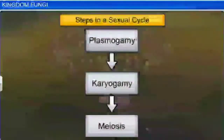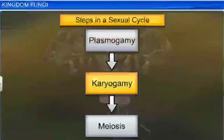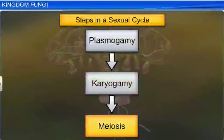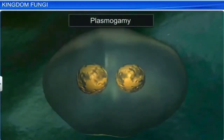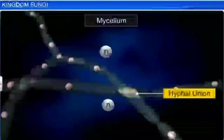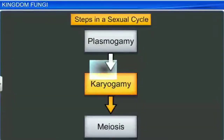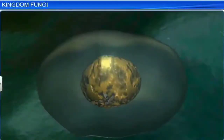There are three steps in the sexual cycle: Plasmogamy, Karyogamy, and Meiosis. The first stage involves the fusion of protoplasms between two motile or non-motile gametes. This is called Plasmogamy. Plasmogamy occurs when two haploid hyphae of compatible mating types fuse. After Plasmogamy, the two nuclei fuse together in the second stage, known as Karyogamy.